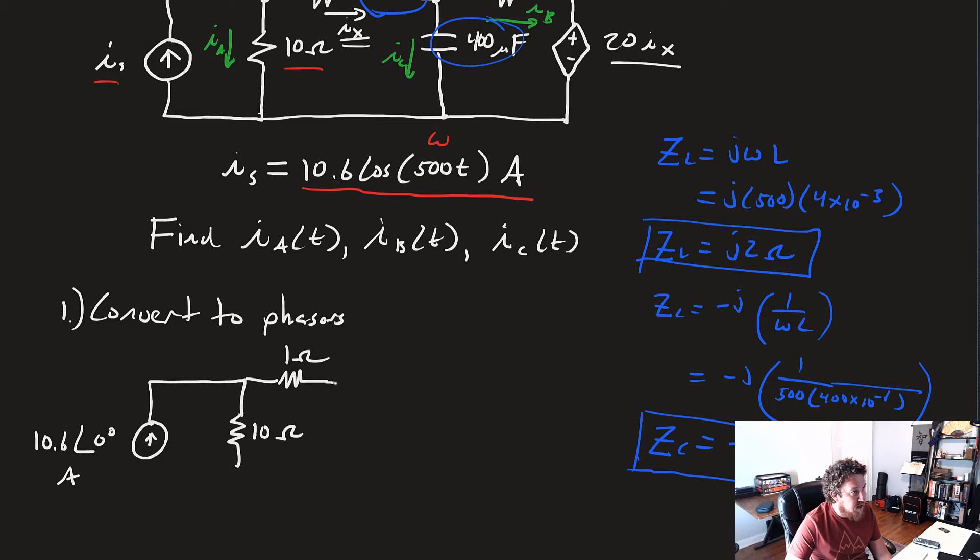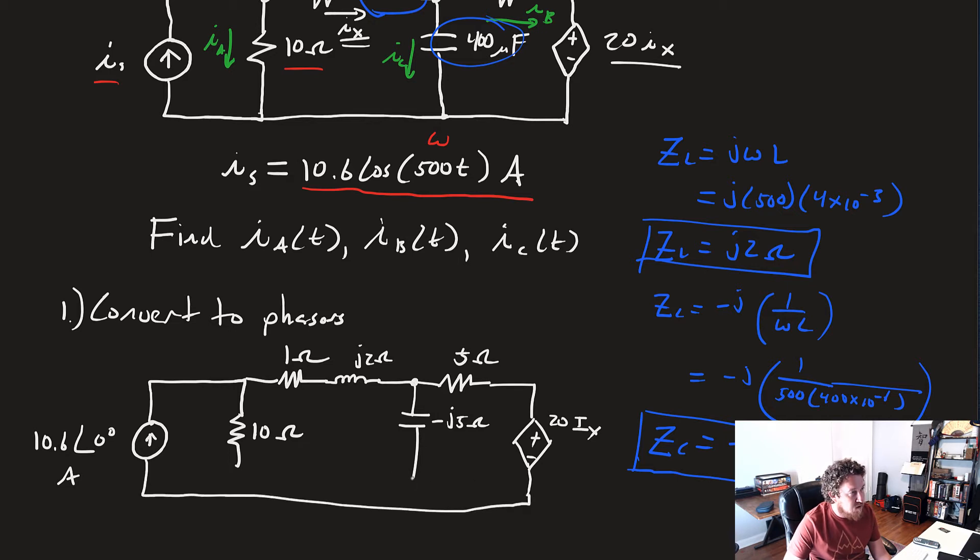So there's our impedance for the inductor, J2 omega, and the capacitor, minus J5 omega. The other resistor is 5 ohms. Then we've got our dependent voltage source, which is still 20Ix. Now we're ready to actually solve this problem.